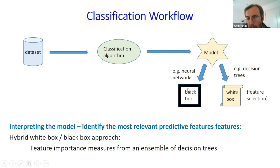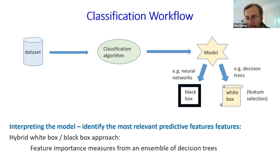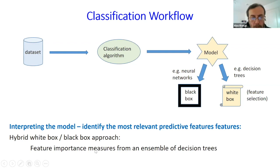Classification models can be divided into two broad types based on interpretability. Black box models don't let us understand what the model is doing. White box models are expressed in a representation the user can understand. These days the majority of practitioners tend to use black box algorithms, as they generally achieve higher predictive performance. But even with black box models, it's possible to interpret them through post-processing transformations — for example, computing feature importance measures from an ensemble of decision trees, which is a technique I'll discuss later.